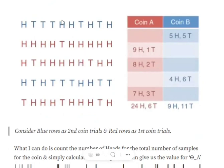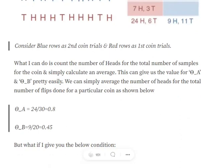Now assume I give you some observations from the environment: heads, tail, tail, tail, heads, heads, tail, heads, tail, heads — and similarly four other sets. I've also indicated which observation comes from which coin — blue ones from coin B and red ones from coin A. If I tell you to calculate theta_a and theta_b, it's straightforward: calculate total heads and tails for each coin, divide heads by total flips. We get theta_a = 0.8 and theta_b = 0.45.